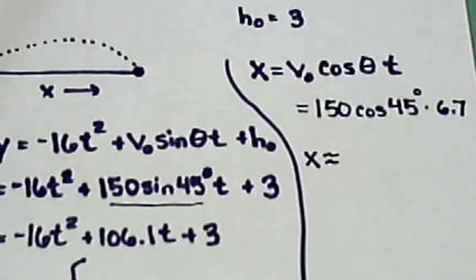And if we calculate that all out, 150 times cosine of 45 times 6.7.